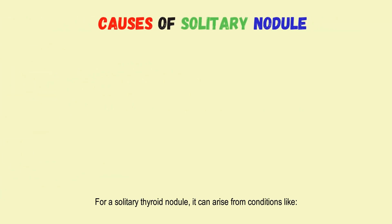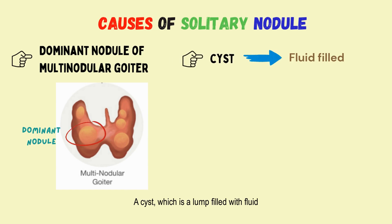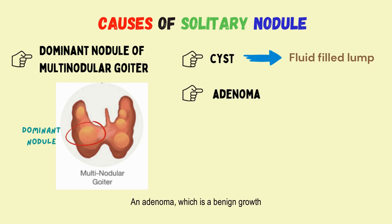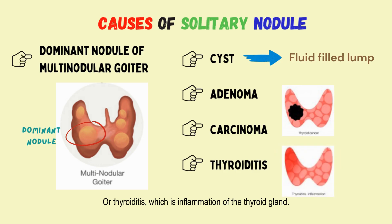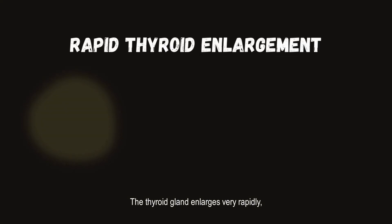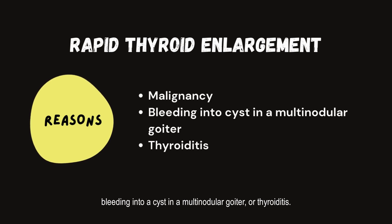For a solitary thyroid nodule, it can arise from conditions like a dominant nodule of a multinodular goiter, a cyst which is a lump filled with fluid, an adenoma which is a benign growth, carcinoma which refers to a malignant growth, or thyroiditis which is inflammation of the thyroid gland. Sometimes the thyroid gland enlarges very rapidly, and this could be due to serious conditions like malignancy, bleeding into a cyst in a multinodular goiter, or thyroiditis.